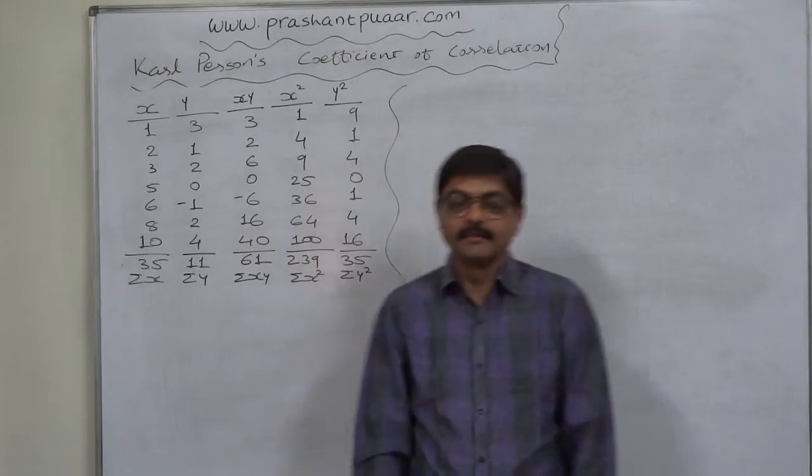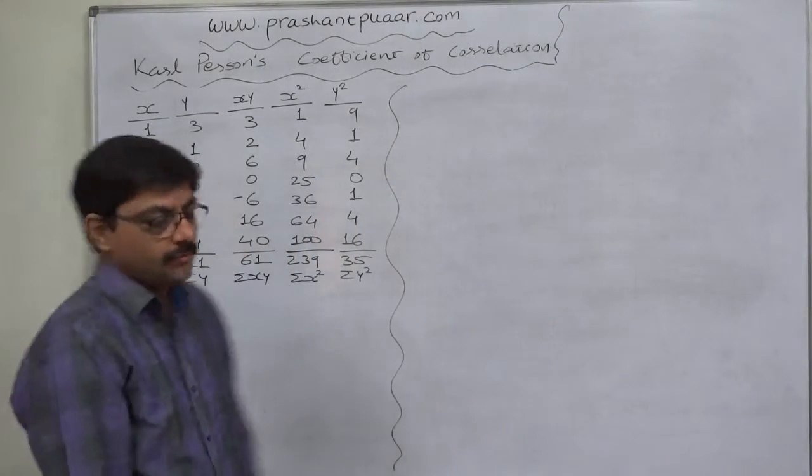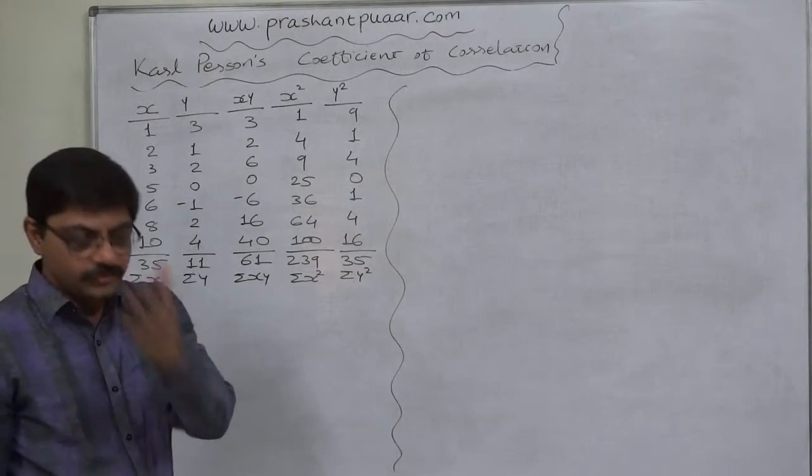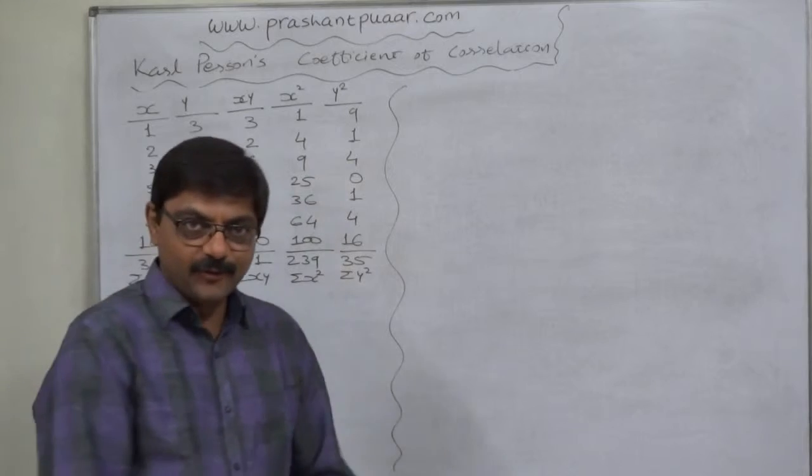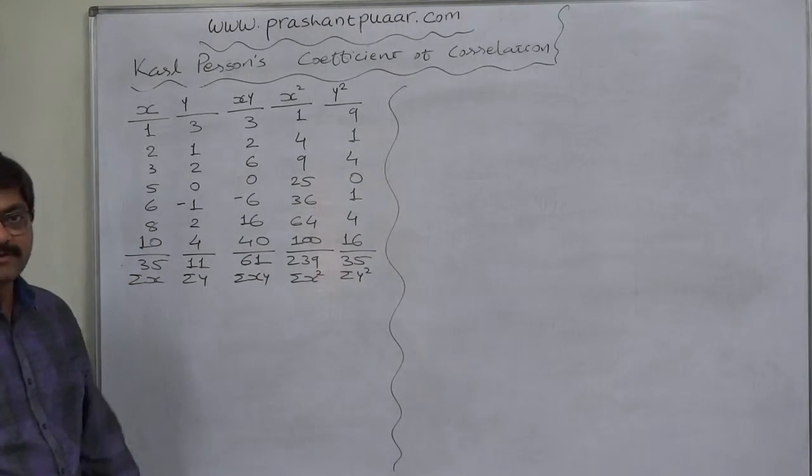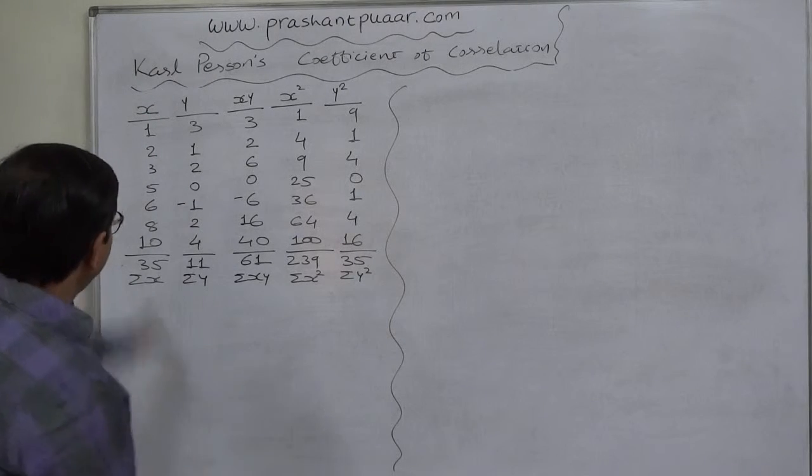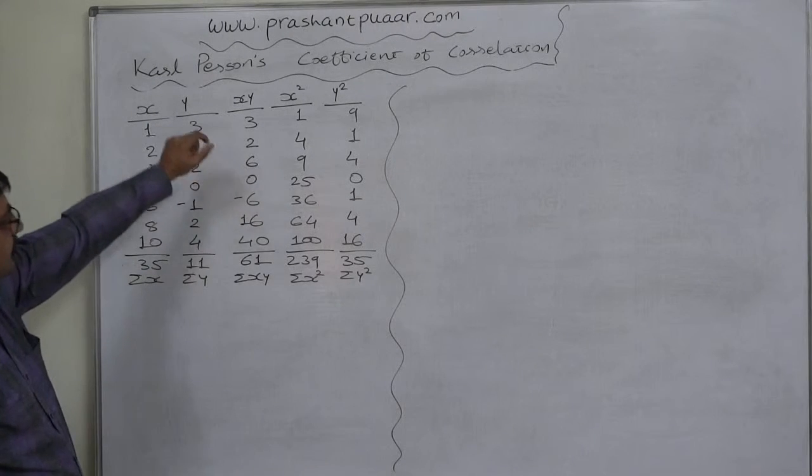Hello friends, welcome and namaskar. We are going to calculate the coefficient of correlation, or Karl Pearson's coefficient of correlation, through the easiest possible formula. We will use all these five summations. These two columns are readily available as our data X and Y, which take various different types of values.